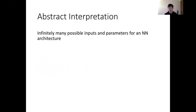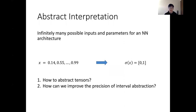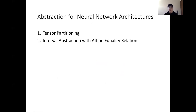We use abstract interpretation in our static analysis to deal with the many possible inputs and parameters for a neural network architecture. For example, if variable x can be any value between 0 and 1, we use an interval to represent it — sigma(x) means the range of x is [0, 1]. Two questions arise: first, how to abstract tensors, which are the main components in neural network architectures; and second, how to improve the precision of interval abstraction. We propose tensor partitioning for abstracting tensors and use affine correlation to improve precision.